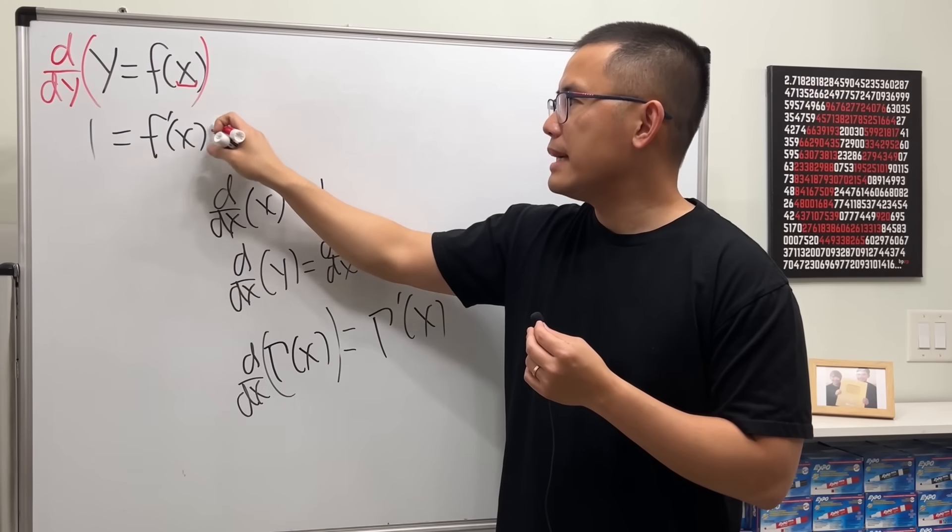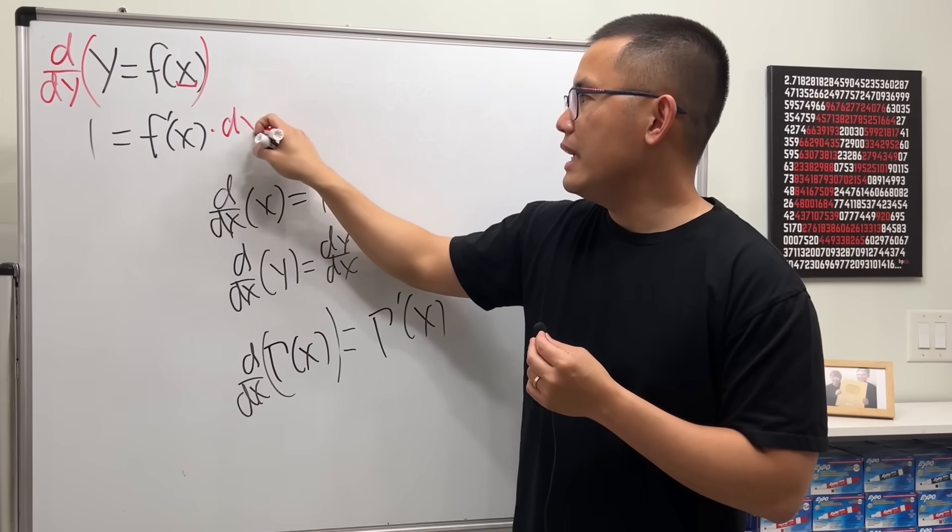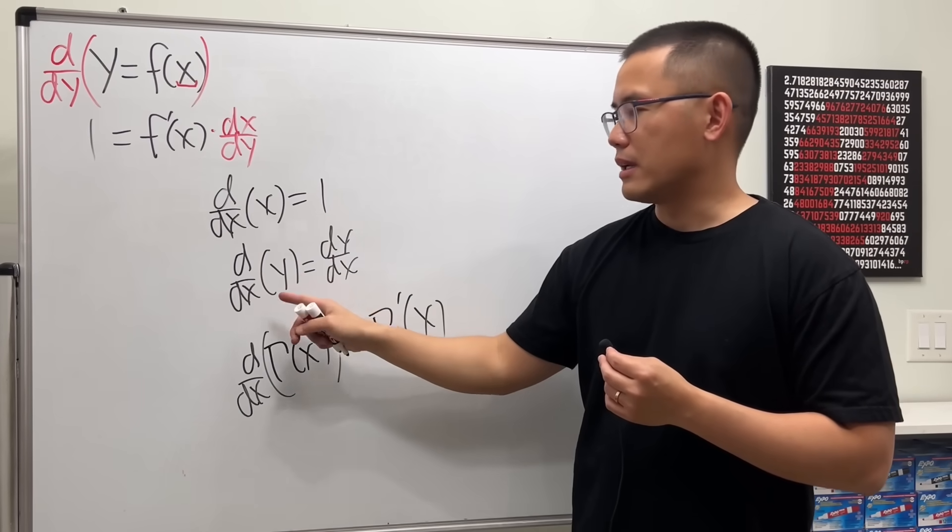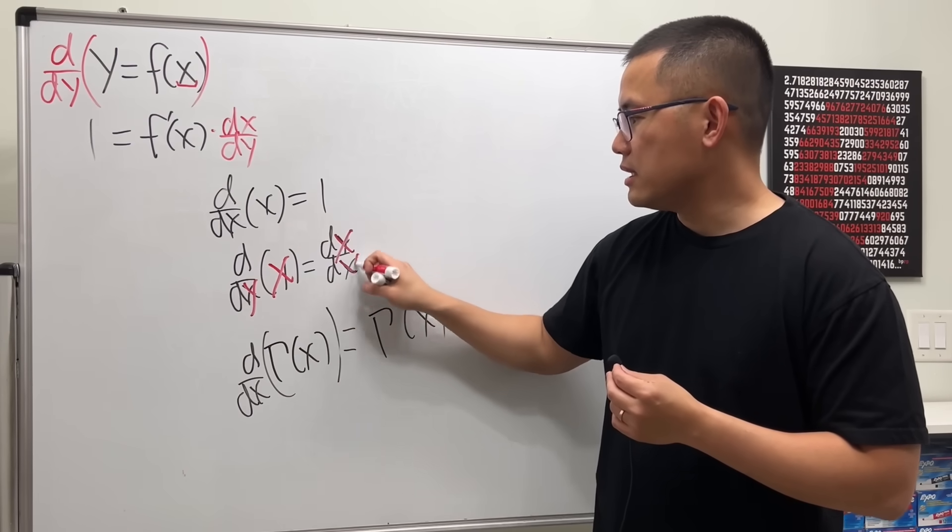We have to multiply by the derivative of x with respect to y, and that is dx/dy. So it's kind of like this, but like x instead, and then y on the outside like that, so dx/dy.